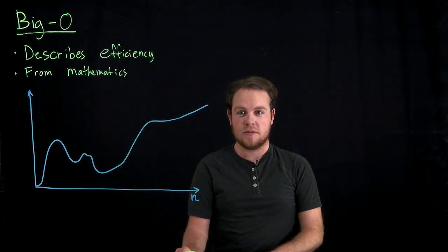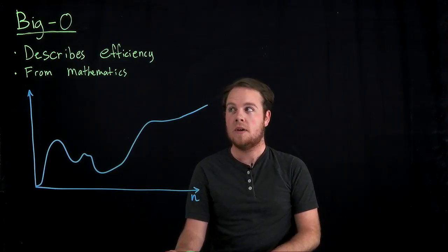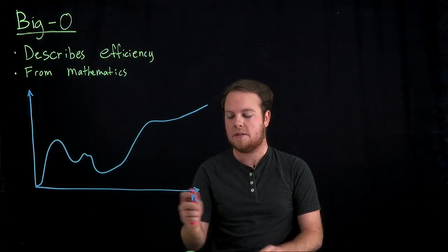So today we're going to talk about big O notation. Big O notation is used to describe efficiency of algorithms. Its origin was from mathematics.